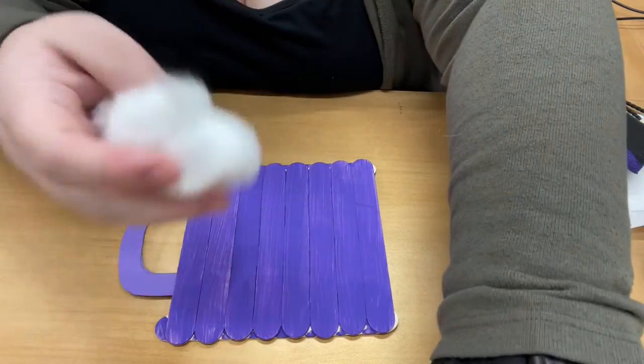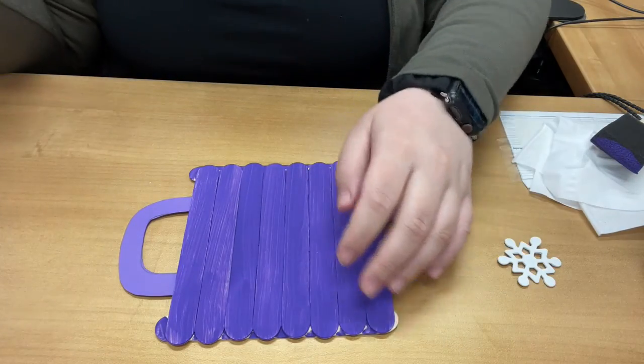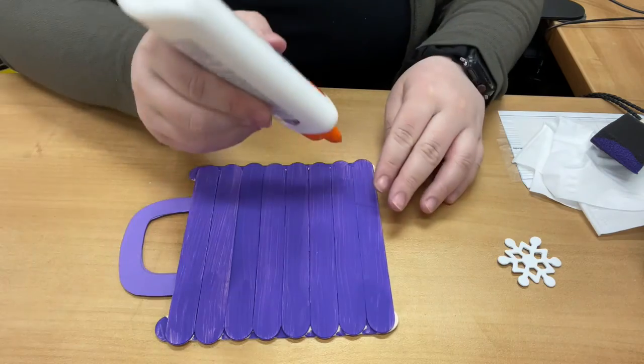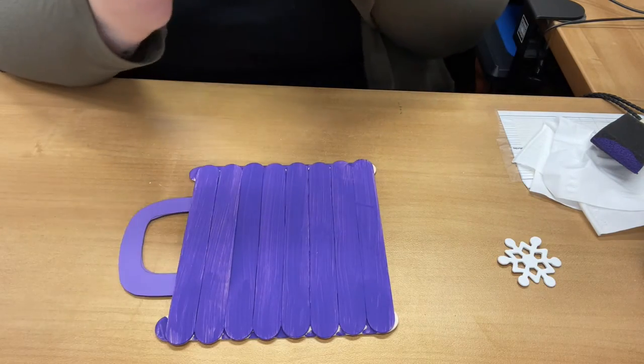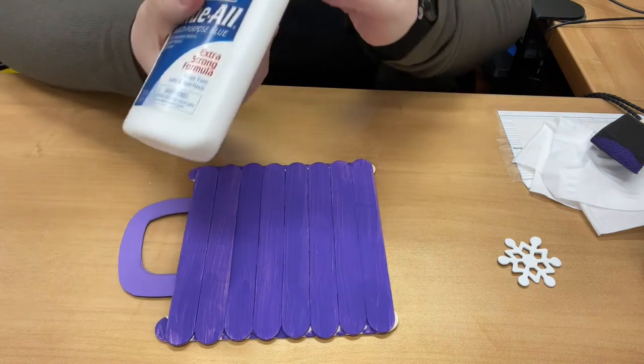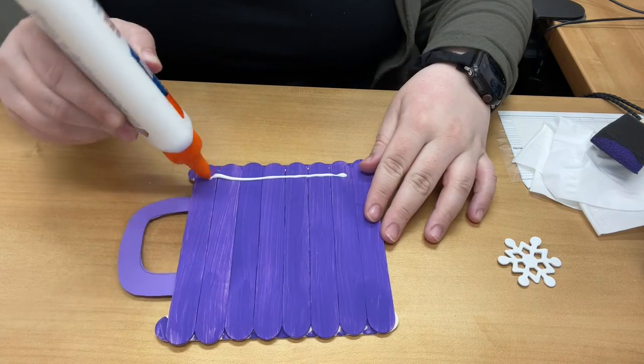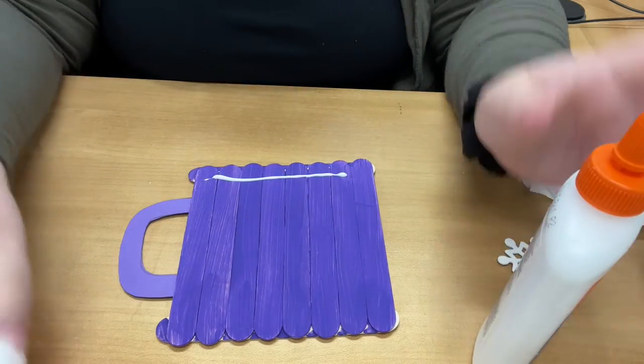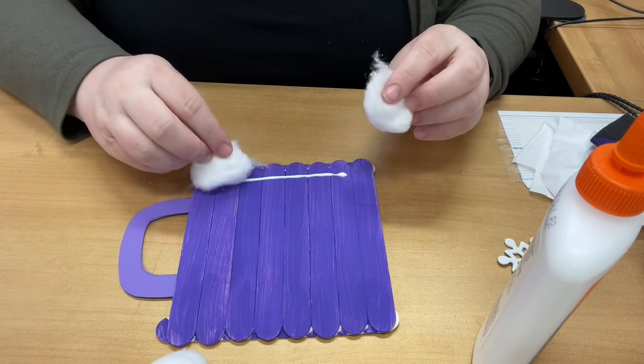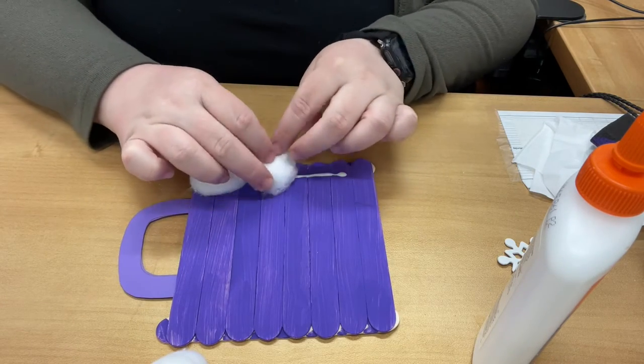I forgot to mention you should also have some cotton balls. So you're going to want to take your cotton balls and I think it's a lot easier to just put a line of glue and then place your cotton balls down. It's up to you, you can do it individually. And right here is going to be the marshmallows on the hot cocoa.